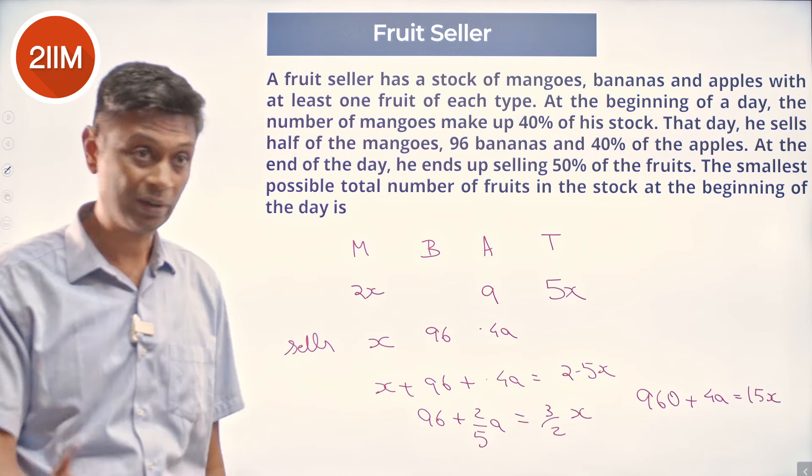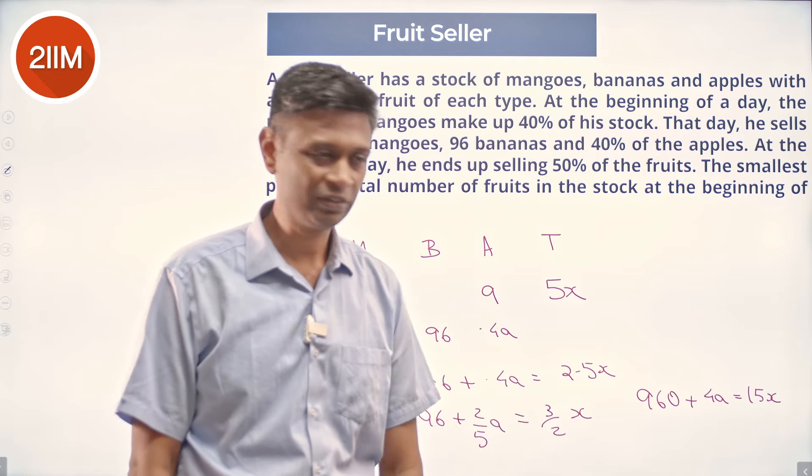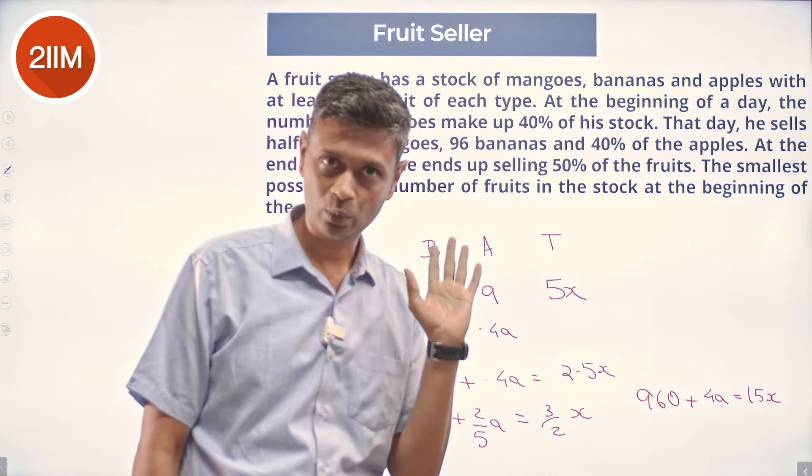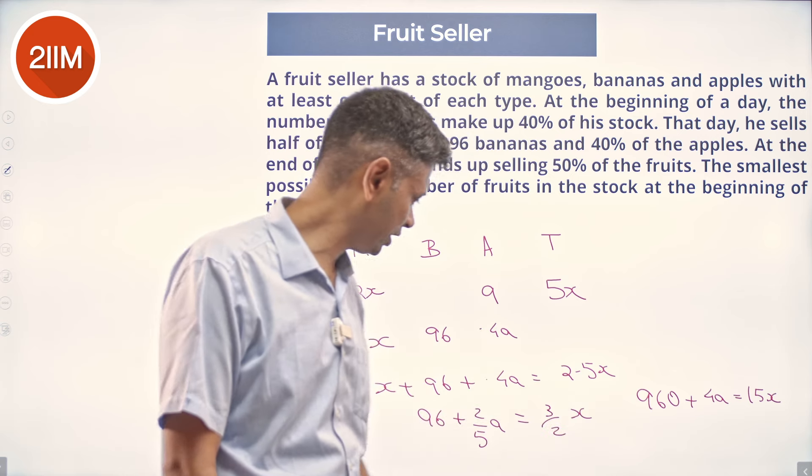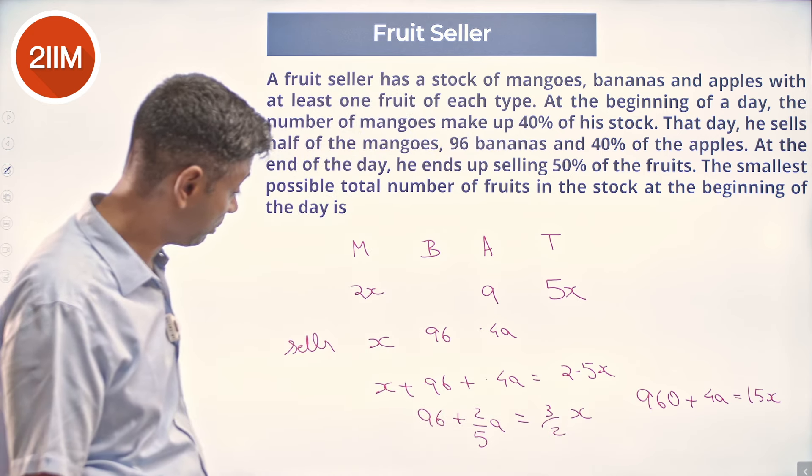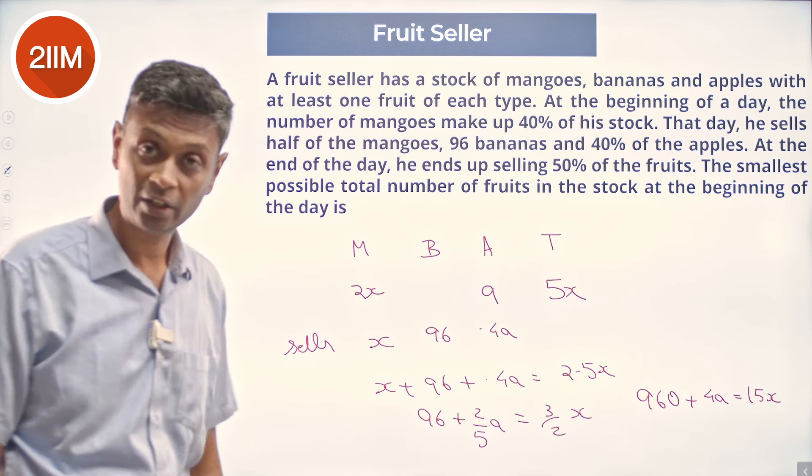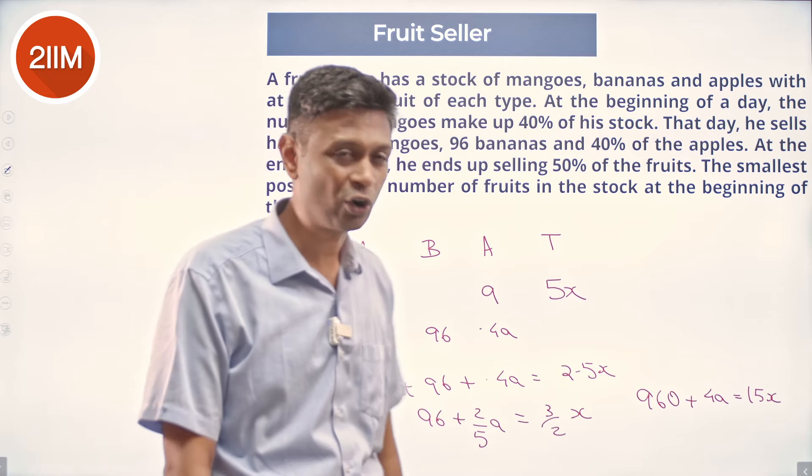x is at least 1, so there would be some apples at least. We need to find some integer solution that satisfies this. 960 is a multiple of 15. Multiplying by 10: 2/5 times 10 is 4, and 3/2 times 10 is 3 times 5, which is 15.